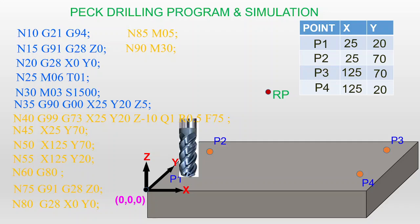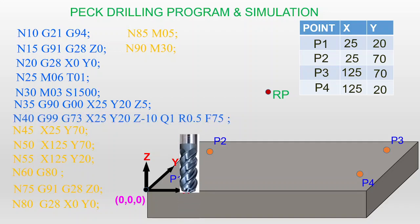Now we start the drilling operation using the G73 peck drilling cycle. The command is G99, G73, X25, Y20, Z-10, Q1, R0.5, F75. The tool will go 10mm deep inside the workpiece. Each peck is 1mm deep with a 0.5mm retract, and the feed rate is 75mm per minute. The first drilling operation at point 1 is now completed.